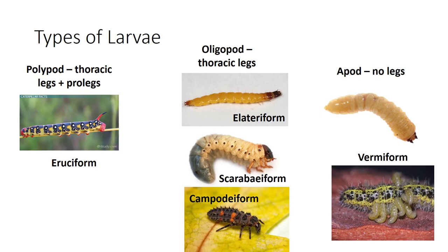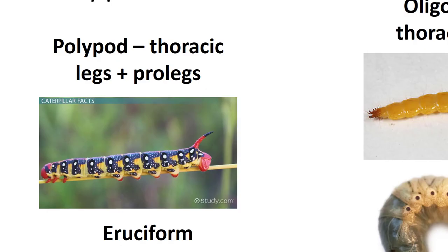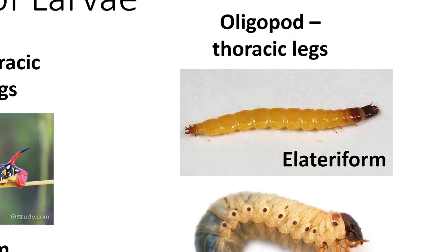Larvae can look quite diverse but can be classified based on their legs or forms. Lepidopteran caterpillars are characteristic of polypod larvae—they have cylindrical bodies with short thoracic legs and abdominal prolegs, or pseudopods, used for locomotion. Sawflies in Hymenoptera and Mecoptera scorpionfly larvae also have polypod larvae, classified as eruciform. Oligopod larvae lack abdominal prolegs but have functional thoracic legs and often prognathous mouthparts. Many are active predators, but others are slow-moving detritivores living in soil.